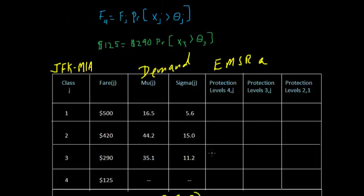Back on the blackboard, we can enter our first protection level of 37. So we're going to protect 37 seats for the $290 fare customers so that those seats don't get sold at $125.